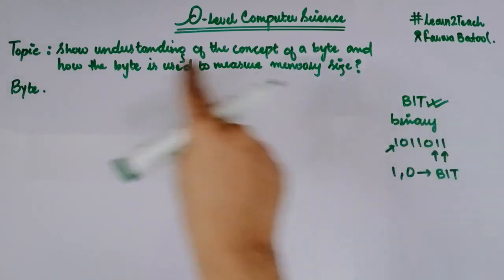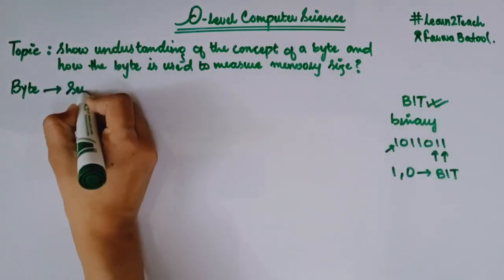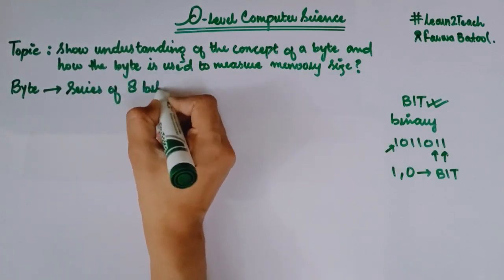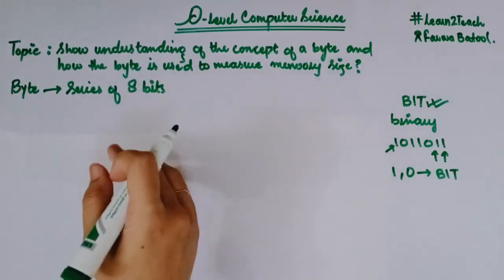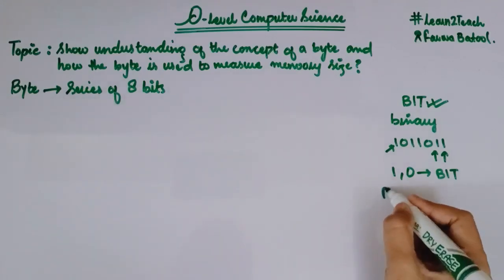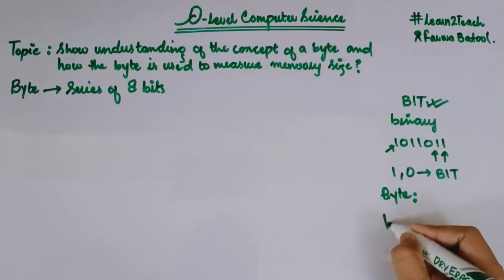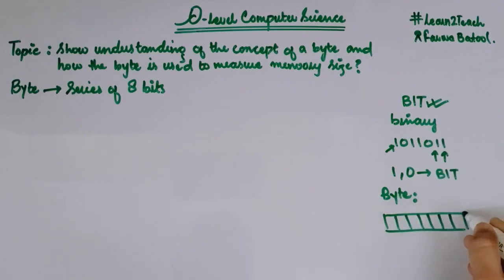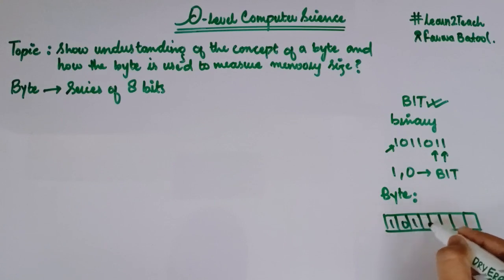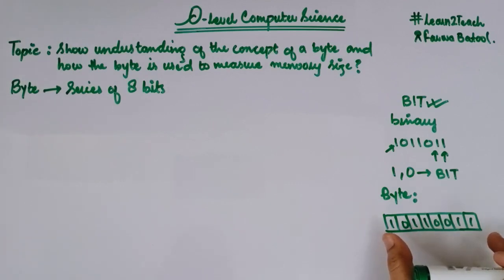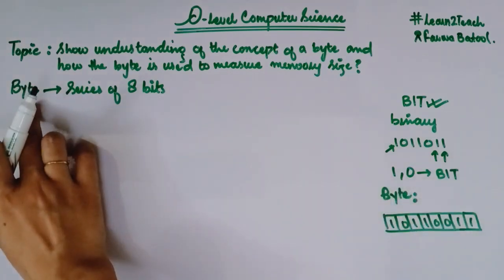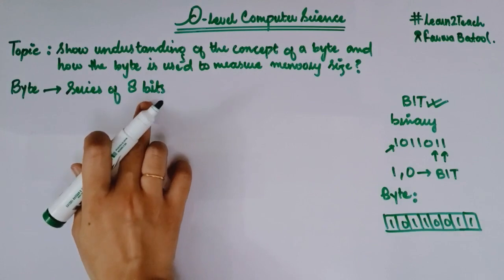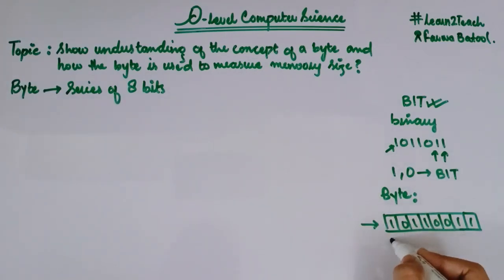Moving towards a byte — a byte is nothing but a series of 8 bits. I can take an example of a byte. Let's suppose I have a memory location or a register having 8 blocks: 1, 2, 3, 4, 5, 6, 7, and 8. It's my register; it can carry almost 8 bits — let's suppose 1, 0, 1, 1, 0, 0, 1, 1. This register of 8 bits can, in other words, be called a byte. Because a byte is a series of 8 bits, if this register contains 8 bits, then I can call it 1 byte.